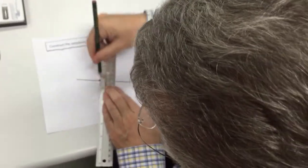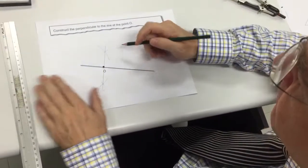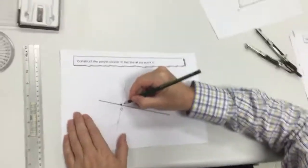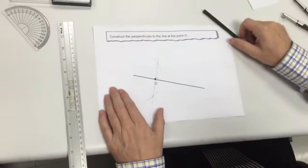The perpendicular to the point O in this line. This angle here will be 90 degrees. Leave the construction lines in.